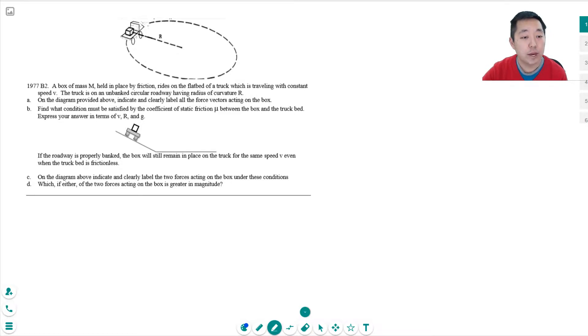So a box of mass M is held in place by friction, rides on a flatbed of a truck which is traveling with constant speed V. The truck is on an unbanked circular roadway having a radius of curvature R, which is going in a circle here.